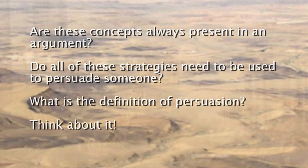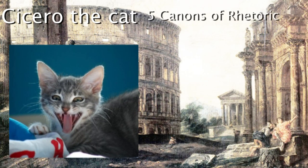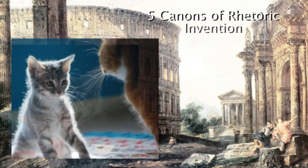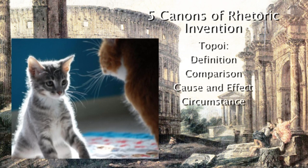Later in Rome, an antagonistic cat named Cicero organized the five canons of rhetoric. The first is invention. Remember our buddy Aristotle? He described topics of invention called topoi. His topics were definition, comparison, cause and effect, and circumstance. With these in mind, how are you going to effectively maximize persuasion?